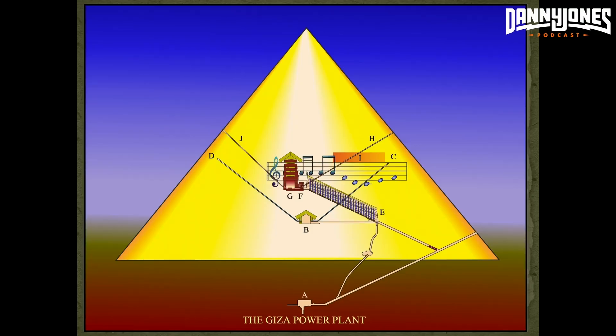Let me see if I got this right. Number A is the subterranean chamber, which is picking up vibrations deep within the earth. That is transmitting vibrations up those shafts — there's two shafts: one that goes out of the pyramid to the right, and then one that goes up into the grand gallery, and then through the grand gallery into the king's chamber.